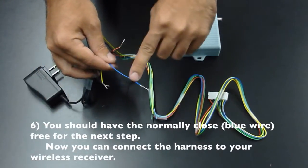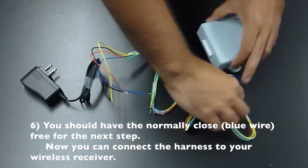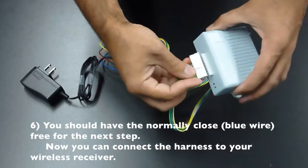Now you should have the normally closed or blue wire free for the next step. Now you can connect the harness to your wireless receiver.